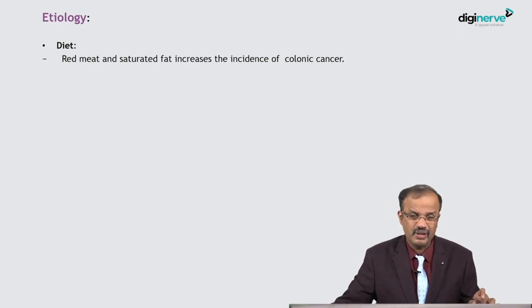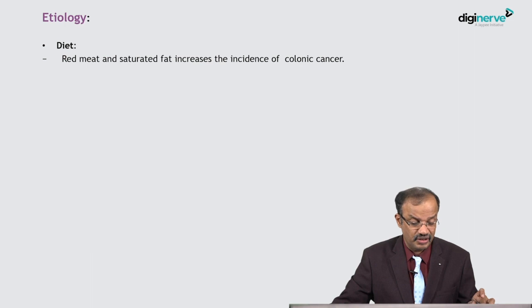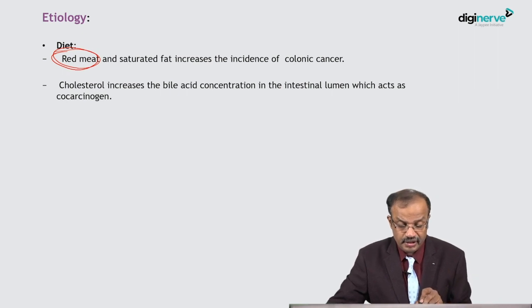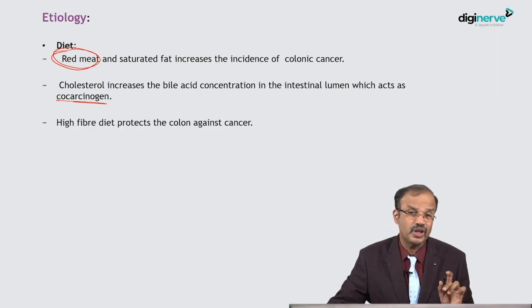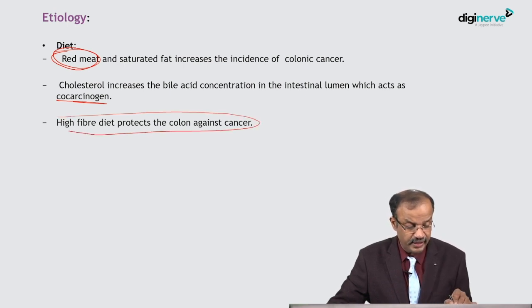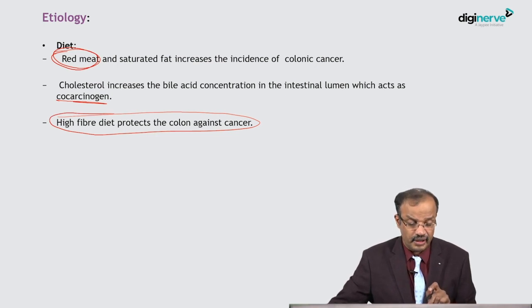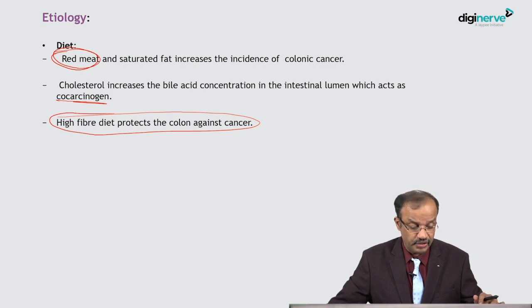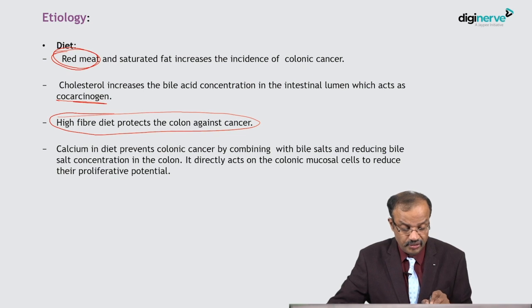Regarding etiology, diet is important. Red meat and saturated fat increase the incidence of colon cancer — red meat is a very high risk factor for most GI malignancies. High cholesterol increases bile acid concentration in the intestinal lumen, which acts as a co-carcinogen. High cholesterol is also a high risk for developing colonic cancers. High fiber diet protects the colon against cancer — vegetarian diet decreases the chances of colon cancer.